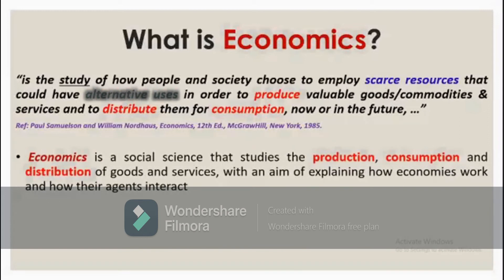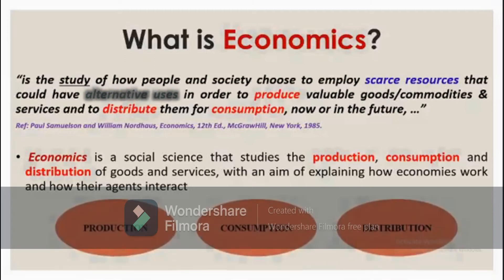Economics is a social science that studies the production, consumption, and distribution of goods and services, with an aim of explaining how economies work and how their agents interact. In economics, we basically study how production is done, what is produced, and how it is consumed. We also study how any good, commodity, or service is distributed.